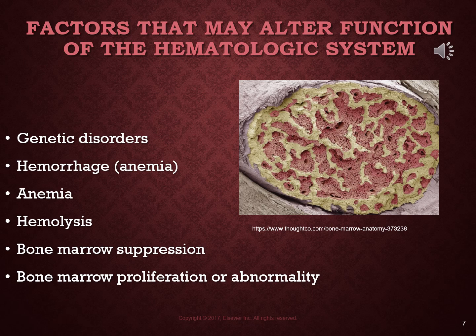One factor that can alter hematologic function is genetics, as several genetic disorders can cause serious problems. Hemophilia is one example — you are missing certain clotting factors and your blood doesn't clot normally. Sickle cell disease is a genetic defect that causes misshapen red blood cells, which can cause problems with oxygenation, pain, bleeding into joints, and other complications due to the shape of the red blood cells.